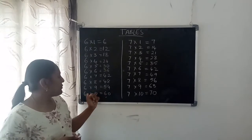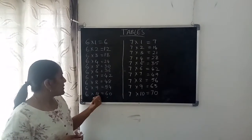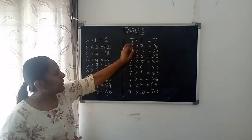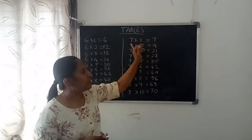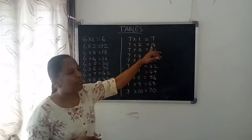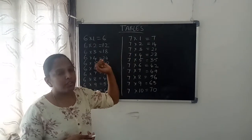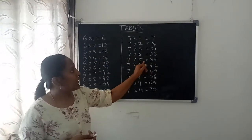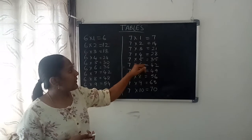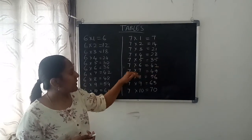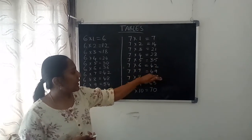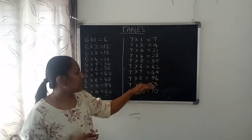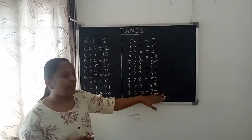Six nines are fifty-four, six tens are sixty. Coming to seven table: seven ones are seven, seven twos are fourteen, seven threes are twenty-one, seven fours are twenty-eight, seven fives are thirty-five, seven sixes are forty-two, seven sevens are forty-nine, seven eights are fifty-six, seven nines are sixty-three, seven tens are seventy.